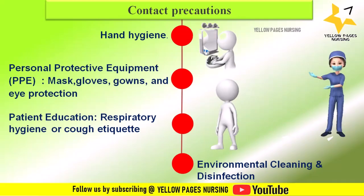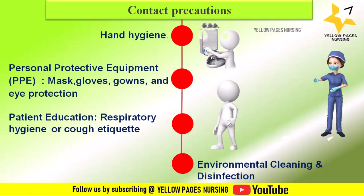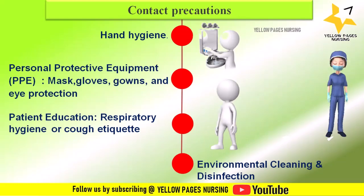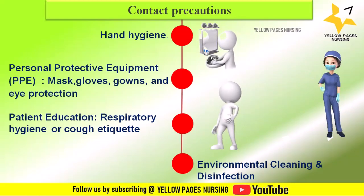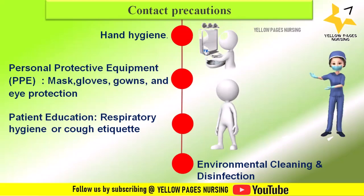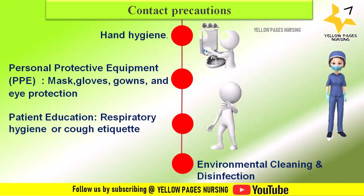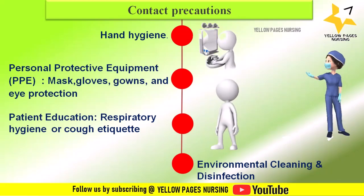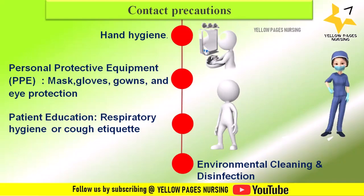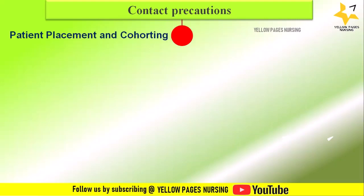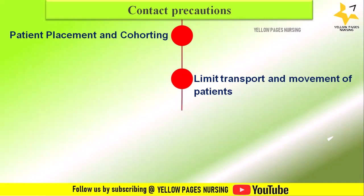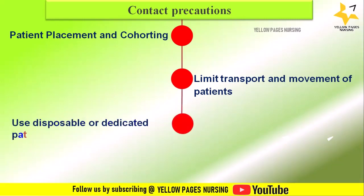Prioritize cleaning and disinfection of patient rooms, ensuring rooms are frequently cleaned and disinfected — for example, daily or prior to use by another patient in an outpatient setting. Focus on frequently touched surfaces and equipment in the immediate vicinity of the patient. Additional contact precautions include patient placement and cohorting, limiting transport and movement of patients, and using disposable or dedicated patient care equipment.